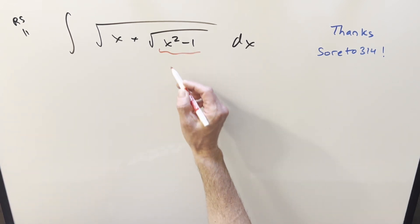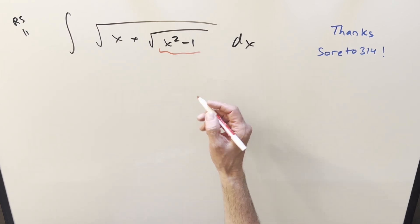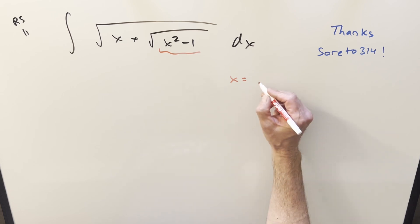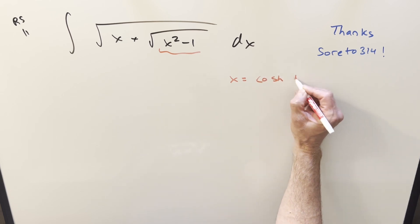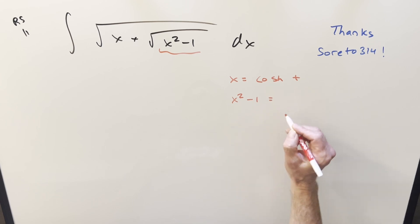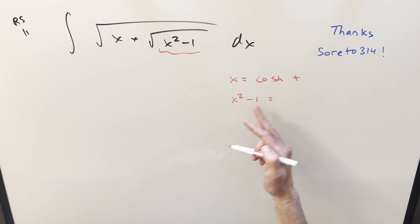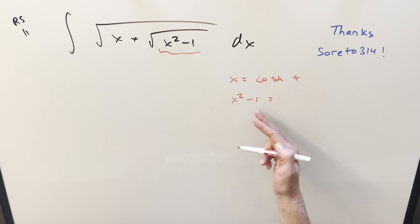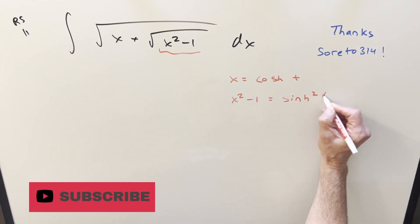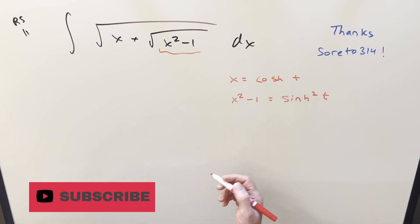What often works is substituting for hyperbolic cosine. So we can do x equal to cosh of t. The reason this is nice is because x squared minus 1, using identities, is the same thing as cosh squared minus 1, which is sinh squared of t — just using the trig identities for the hyperbolic trig functions.